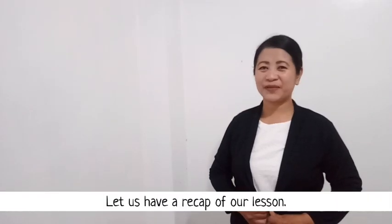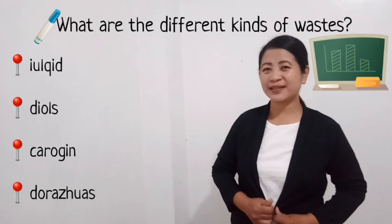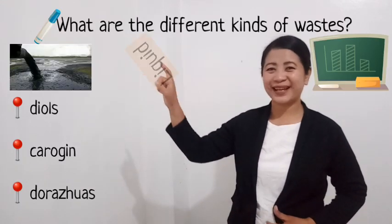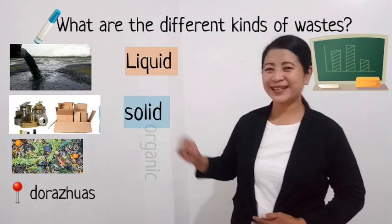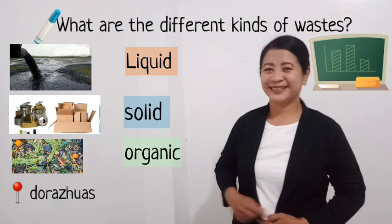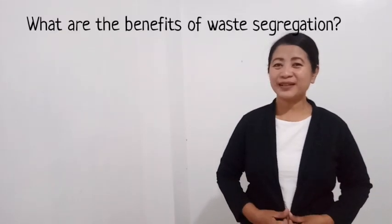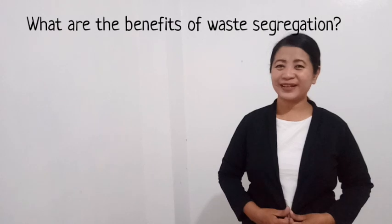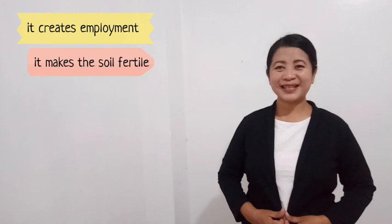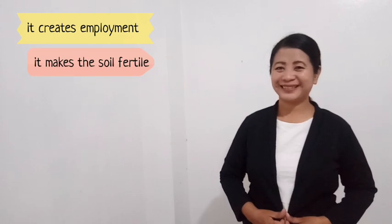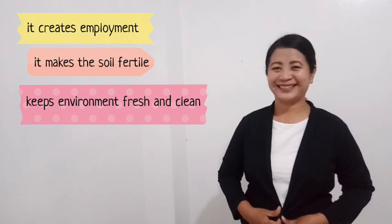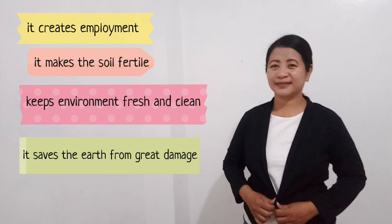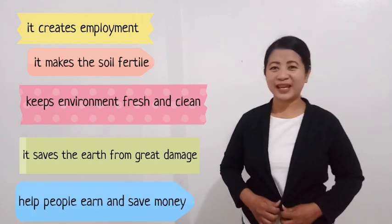Let us have a recap of our lesson. The different kinds of waste are: liquid waste, solid waste, organic waste, and hazardous waste. The benefits of waste segregation include: it creates employment, it makes the soil fertile, it keeps the environment fresh and clean, it saves the earth from great damage, and it helps people earn and save money.